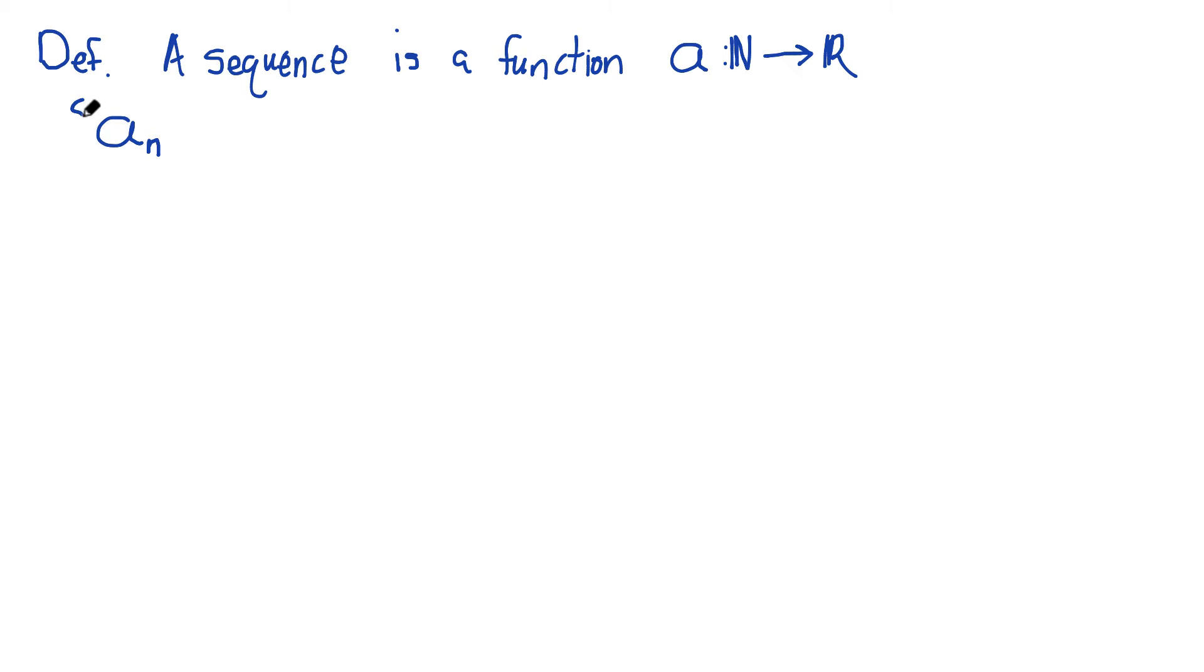So you might see the entire sequence denoted like this with curly brackets around, or you might see it denoted with some script out here telling you exactly where it starts, maybe 1 to infinity. Typically we're going to say these sequences go on forever, or you might even just see the list of the sequences.